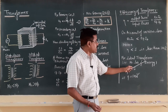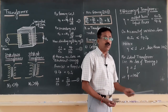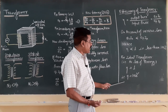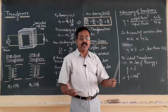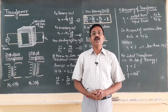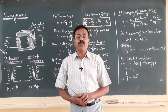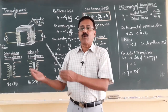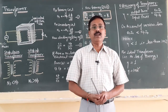For an ideal transformer, there should be no loss of electrical energy, and if there is no loss, then efficiency will be 1, or 100 percent. But nothing is ideal in the world, so an ideal transformer is practically not possible. This device is very useful for the transfer of electrical energy — alternating current or alternating voltage — from the production point to the consumption point.